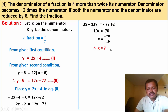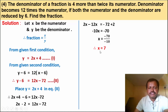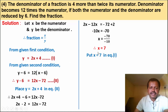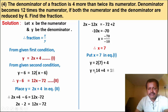Now calculate y. Put x equal to 7 in equation 1: y equals 2 into 7 plus 4 equals 14 plus 4 equals 18. Therefore y is equal to 18.